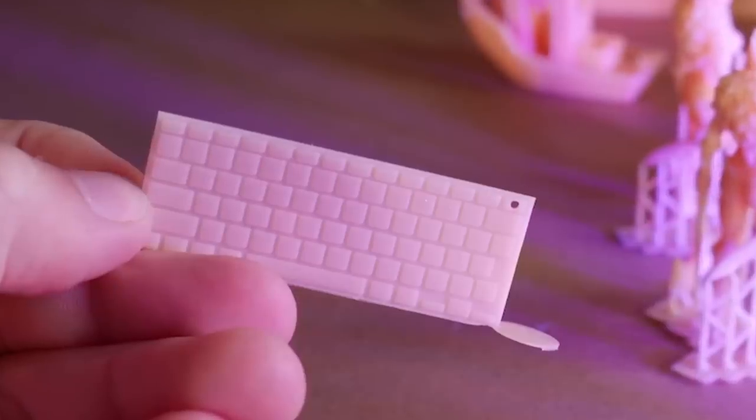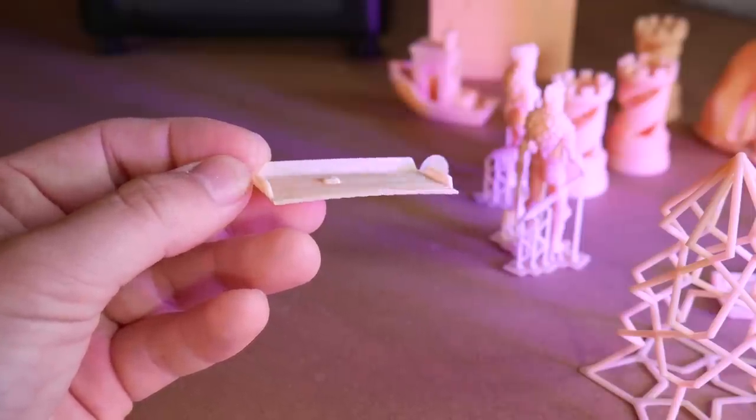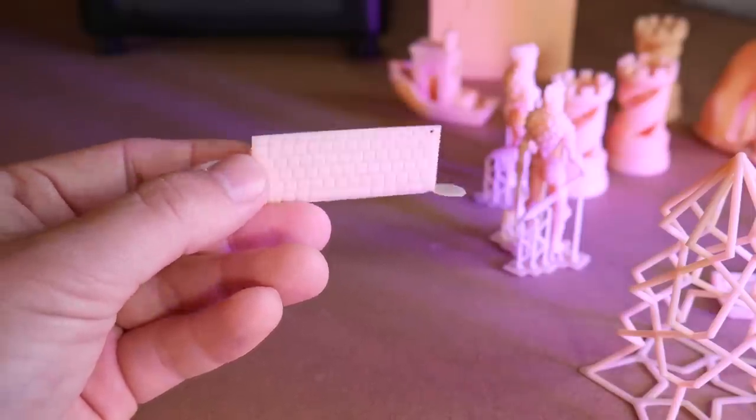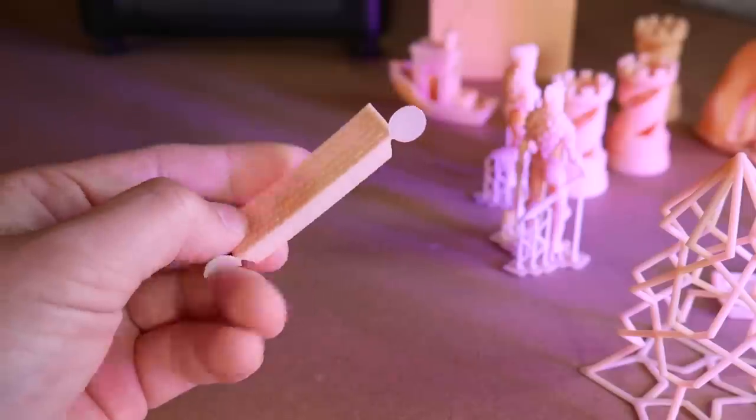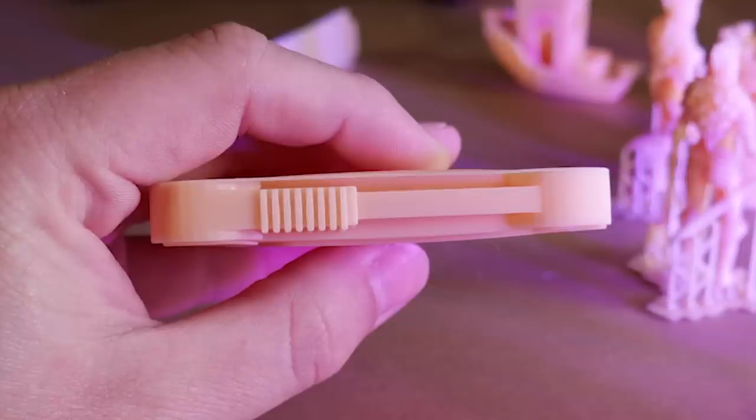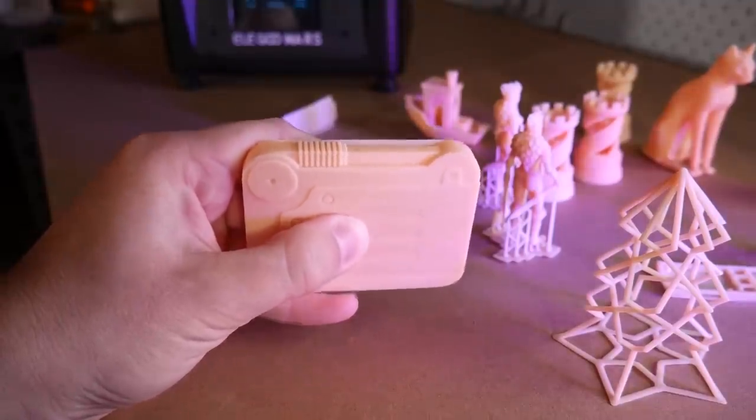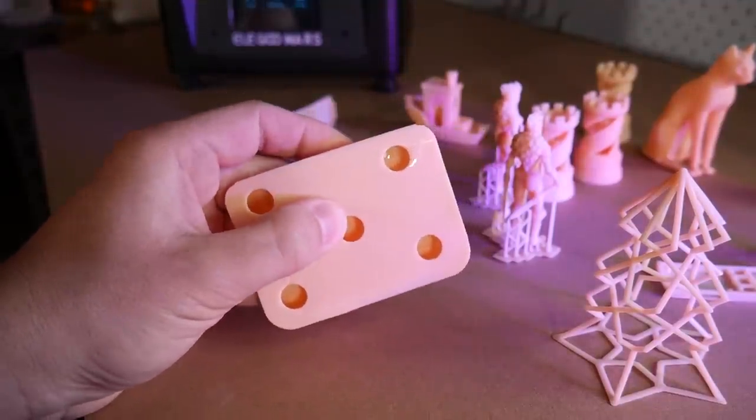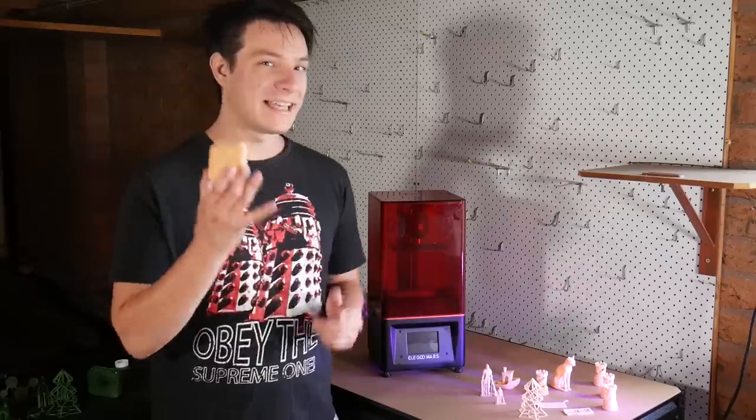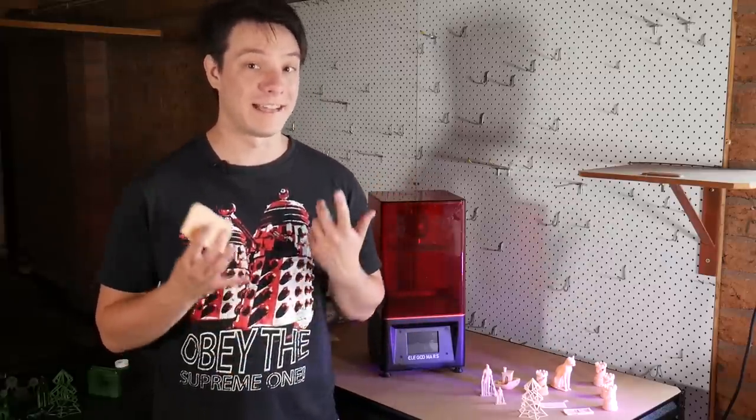Just a heads up - resin prints can warp, which I didn't originally know, especially while curing. This tiny thin keyboard warped because it got too hot in the UV sun and turned into a banana. This Fallout 4 holotape similarly bowed out. When hollowing models they still need some support, so maybe 3D infill is the best way to go. Just keep in mind you'll need to mitigate warping if you're printing things that require ultra-high accuracy or are very thin and delicate.